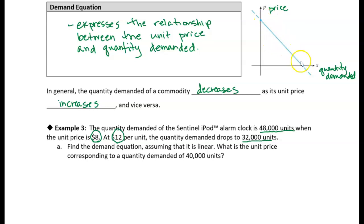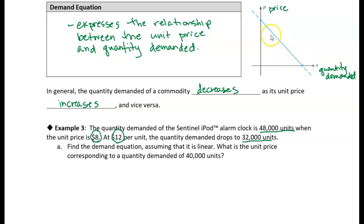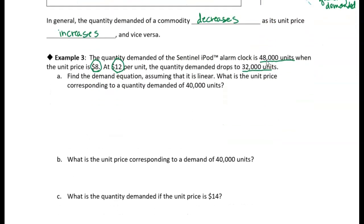You can see the negative slope in the demand curve. As the price goes down, the demand for a quantity increases, and vice versa — as the price goes up, the quantity demanded decreases. So we should expect a negative slope when we write our equation. It's good to have that in mind so we can check ourselves as we go along.